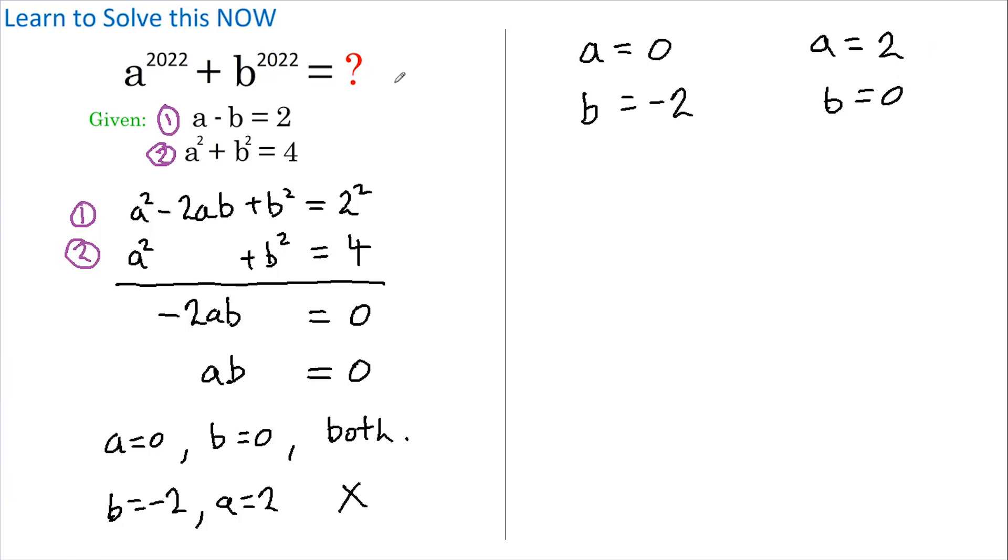If we now plug these numbers into our original equation, we get that the answers must be either 0 to the power of 2022 plus negative 2 to the power of 2022...